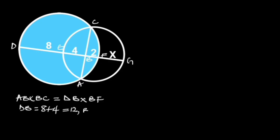BF is equal to 2. Substituting these values in the formula will give us AB times BC equals 12 times 2. 12 times 2 is equal to 24.